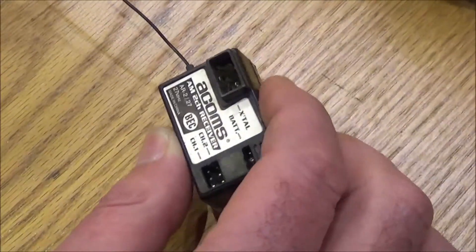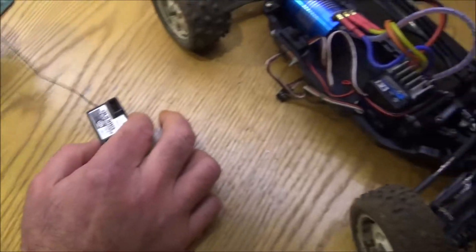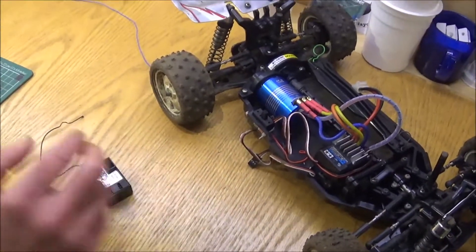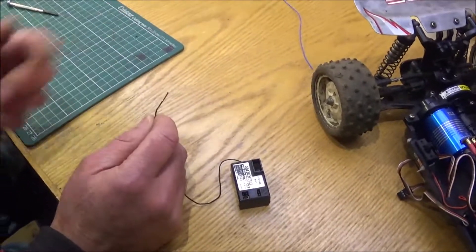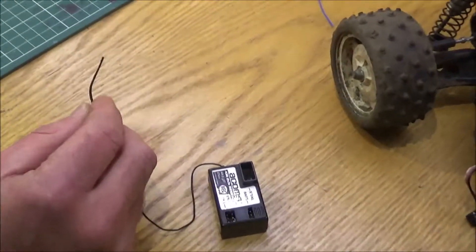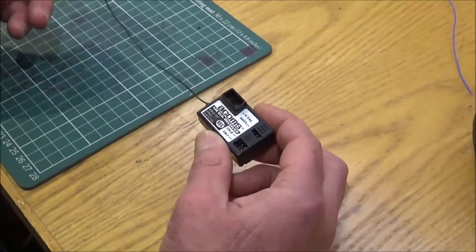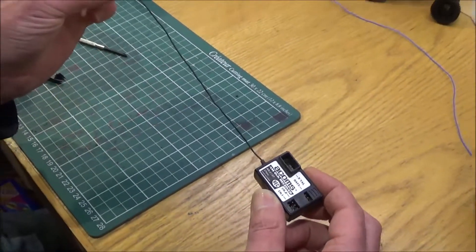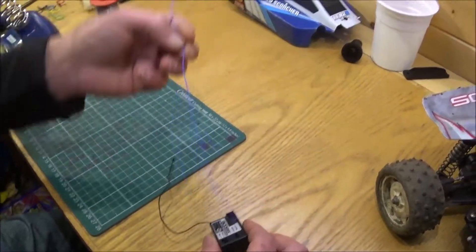We've taken this ACOMS receiver, AM receiver, out of his Neo Scourger because the aerial snapped off. Now we have tried to extend this by attaching another piece of wire on, but the car still cuts out when you go further than about 10 metres away from the transmitter, so what we're going to do is try and replace this wire in the receiver with the new wire that we've got.